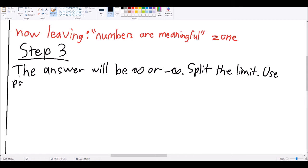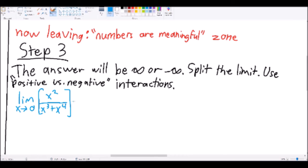All that matters is which parts are positive and which are negative. After that, we can use the multiplication and division of positives and negatives to figure out which infinity it is. So, here's an example. We're trying to find the limit as x approaches 0 of x squared over x cubed plus x to the fourth.